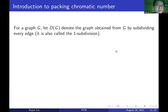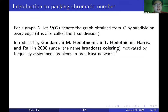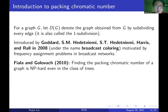For a graph G, we use DG to denote the graph obtained from G by subdividing every edge — also called the one-subdivision. The notion of packing chromatic number was introduced by Goddard, Hedetniemi, Harris, and Rall in 2008, motivated by frequency assignment problems in broadcast networks. Fiala and Golovach in 2010 showed that finding the packing chromatic number is NP-hard even in the class of trees.